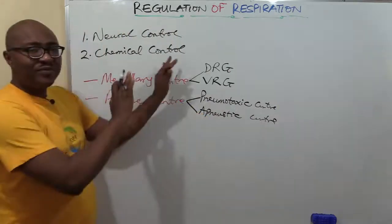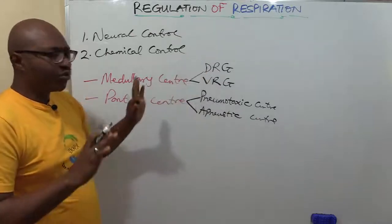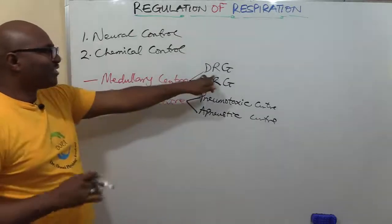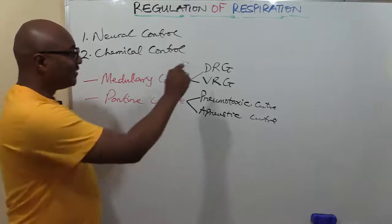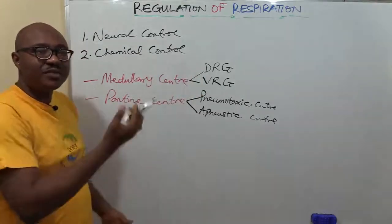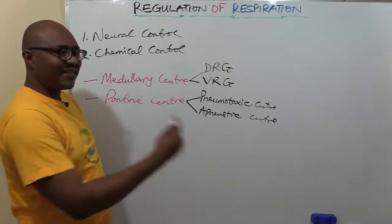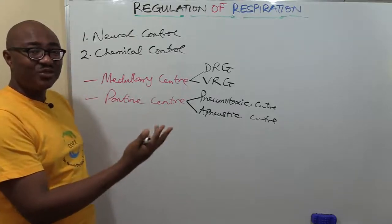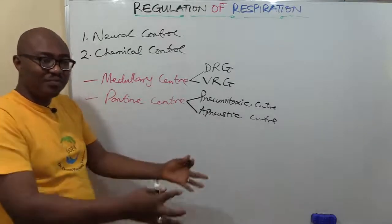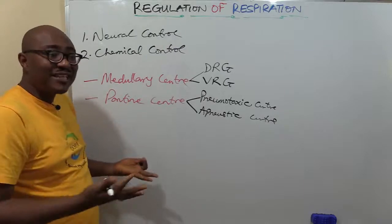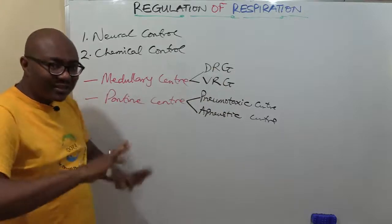The Dorsal Respiratory Group (DRG) in the medullary center controls inspiration. Those neurons fire and send efferent signals to the inspiratory muscles — specifically, they activate the phrenic nerve to make the diaphragm contract, and also activate the external intercostal muscles. That is what inspiration is all about.